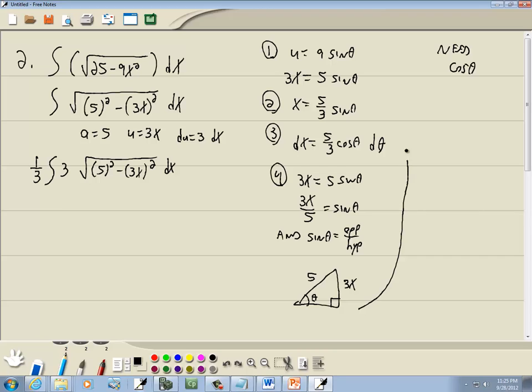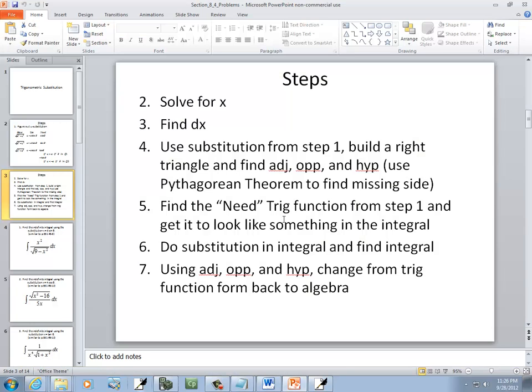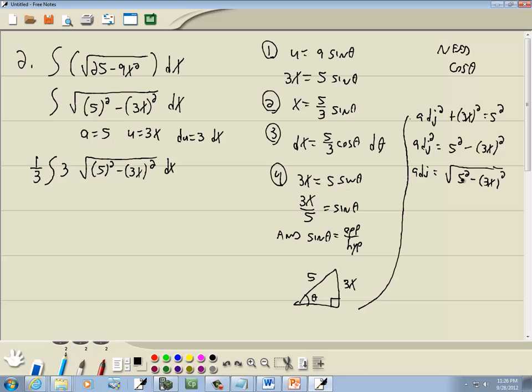So if I use the Pythagorean theorem, this is the adjacent side. The adjacent squared plus 3x squared is going to equal the hypotenuse squared. So I take that over and I get 5 squared minus 3x squared, and our adjacent is equal to the square root of 5 squared minus 3x squared.